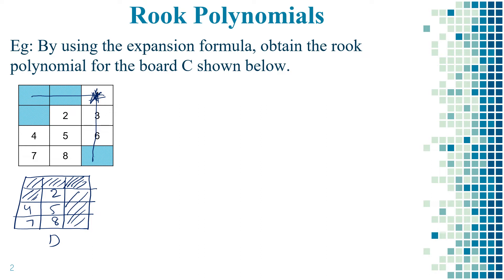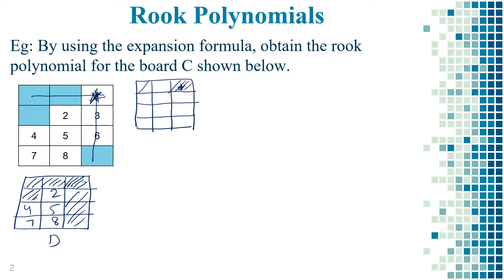Name this board as Board D. For the second step, we disable the square where the asterisk symbol is present. After disabling square one and the already-disabled portions, we are left with squares two, three, four, five, six, seven, and eight — name this board as Board E. We have now divided the given board into two different partitions.